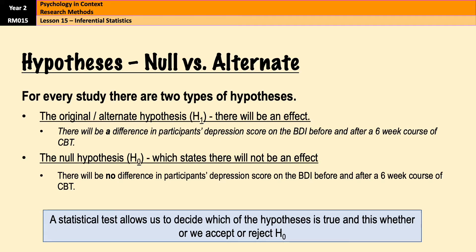If it turns out that we reject the null hypothesis, then effectively what we're saying is that my study is good and my statistical test has told me that my results are good. That's your first bit of key information. When you write about this in an exam, you will be expected to write things like: the results are significant and therefore we can reject the null hypothesis.